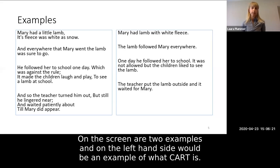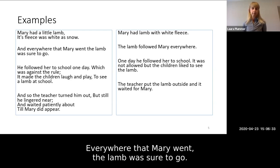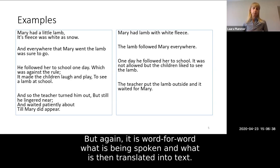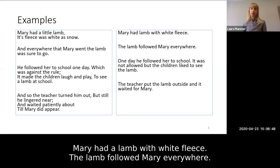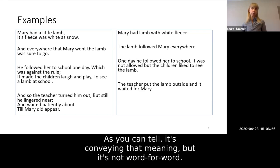On screen are two examples. The left-hand side shows CART, using the nursery rhyme: 'Mary had a little lamb and its fleece was white as snow. Everywhere that Mary went, the lamb was sure to go.' It is word for word what is being spoken, then translated into text. For text translation, shown in the right column: 'Mary had a lamb with white fleece. The lamb followed Mary everywhere.' It conveys that meaning, but it's not word for word.